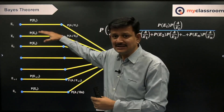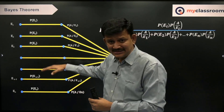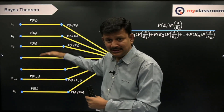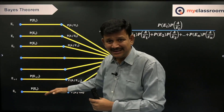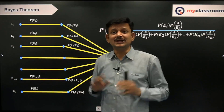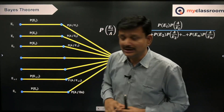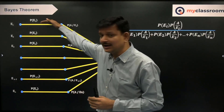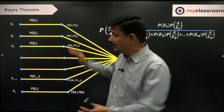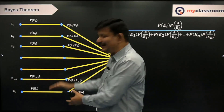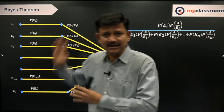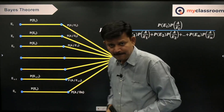Let us say there are N cases: E1, E2, E3, so on up to EN. They are all mutually exclusive — that means if one occurs, the other will not occur. And they are exhaustive — other than these cases, there is nothing else. They are complete.